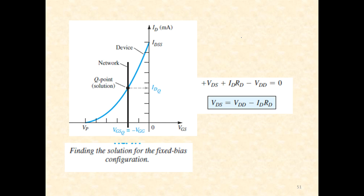To obtain the solution for the fixed bias configuration, take the device characteristics and based on the expression VGS equals minus VGG, draw the line. Wherever the network line coincides with the device characteristics, we obtain the quiescent point, giving us the IDQ value.